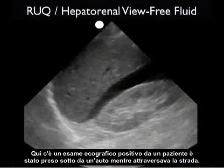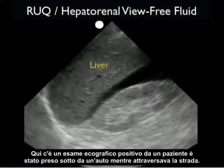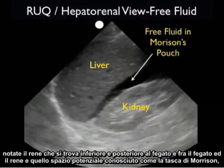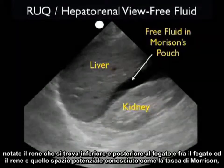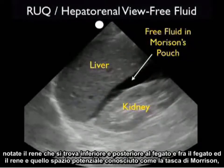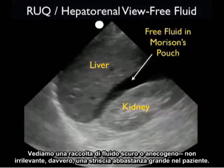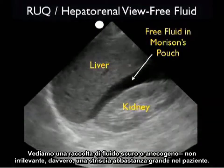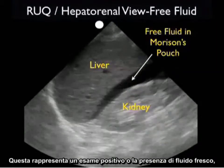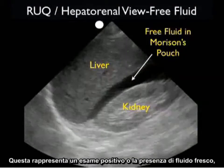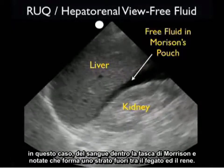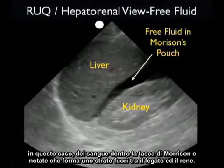Here's a positive ultrasound examination from a patient who was hit by a car while crossing the street. We see the liver in the middle of the image, and the kidney located inferior and posterior to the liver. In between the liver and kidney in that potential space known as Morrison's pouch, we see a dark or anechoic fluid collection — actually a pretty large stripe in this patient. This represents the positive examination, or the presence of fresh fluid, in this case blood, within Morrison's pouch, layering out between the liver and kidney.